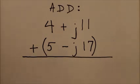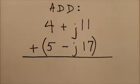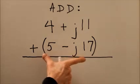Here is an explanation for the answer to final exam question number five in Teach Yourself Electricity and Electronics, fifth edition, page 662. The question asks us to sum these two complex numbers: 4 + j11 plus the quantity 5 - j17.